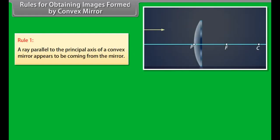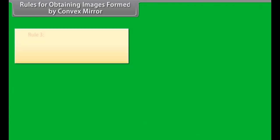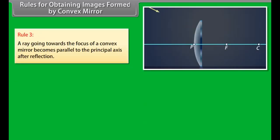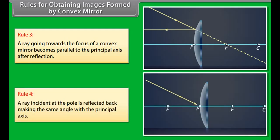Rules for obtaining images formed by convex mirrors: Rule 1 — A ray parallel to the principal axis of a convex mirror appears to come from behind the mirror. Rule 2 — A ray going towards the center of curvature is reflected back along the same path. Rule 3 — A ray going towards the focus of a convex mirror becomes parallel to the principal axis after reflection. Rule 4 — A ray incident at the pole is reflected back making the same angle with the principal axis.